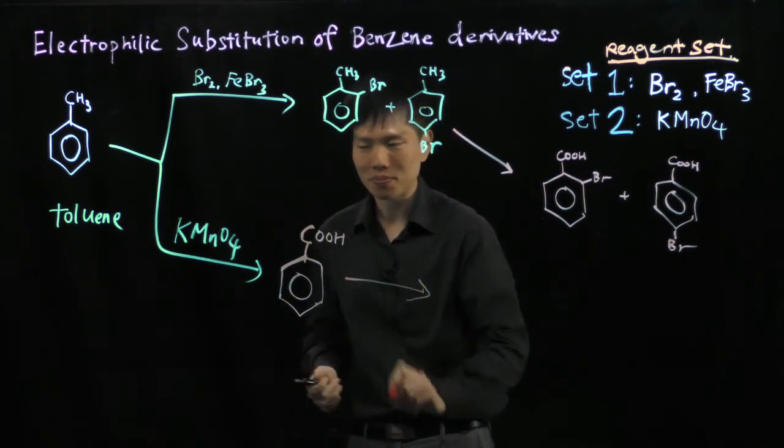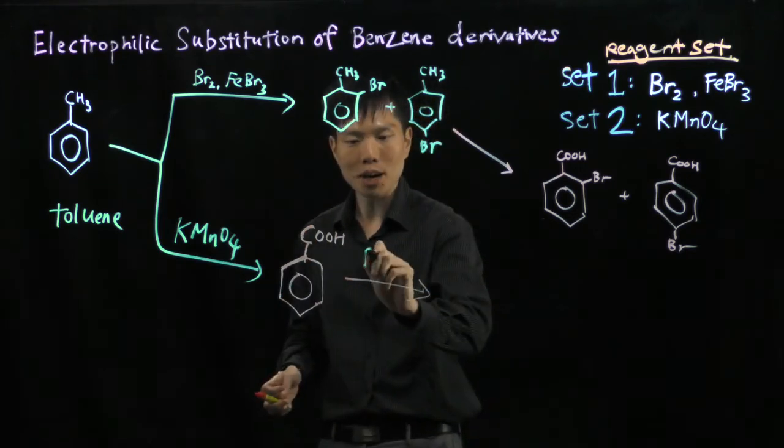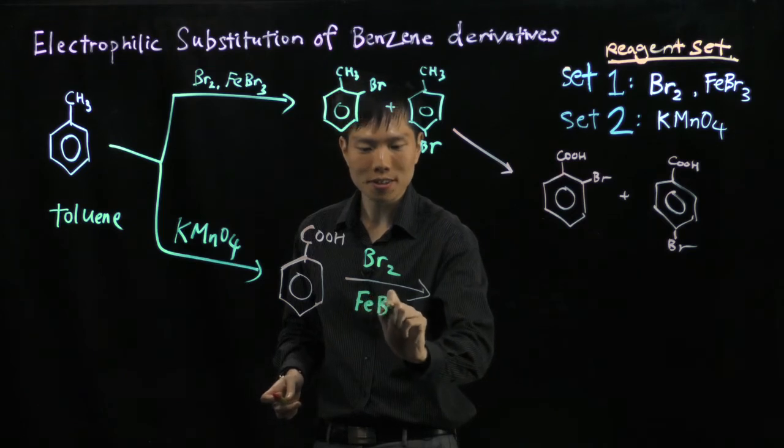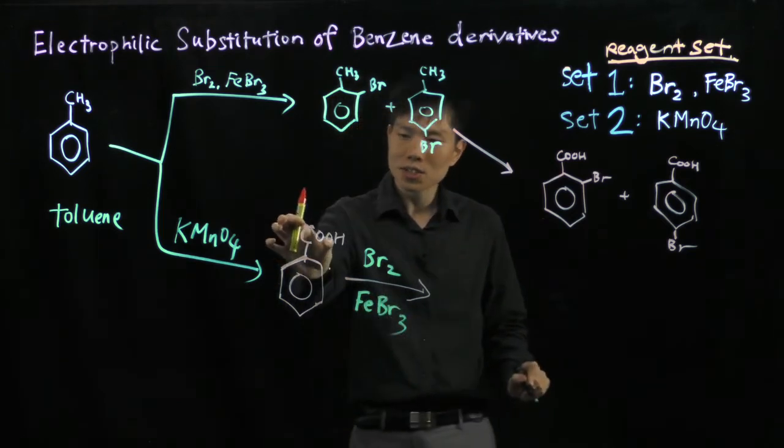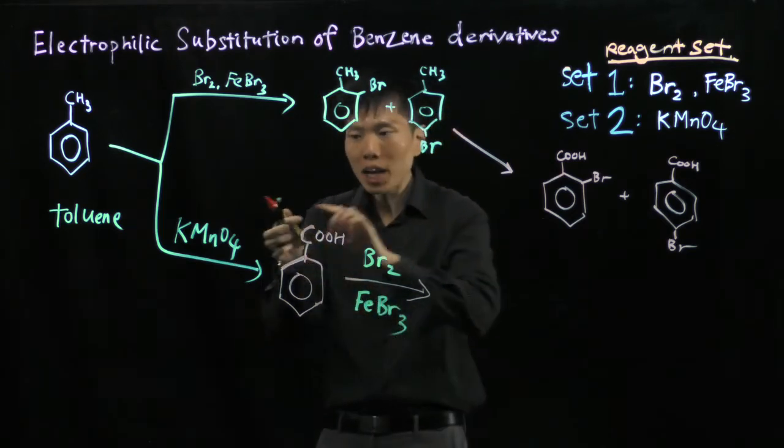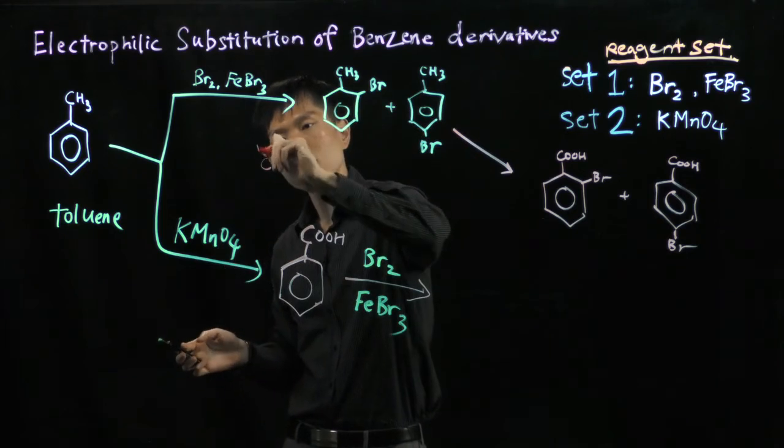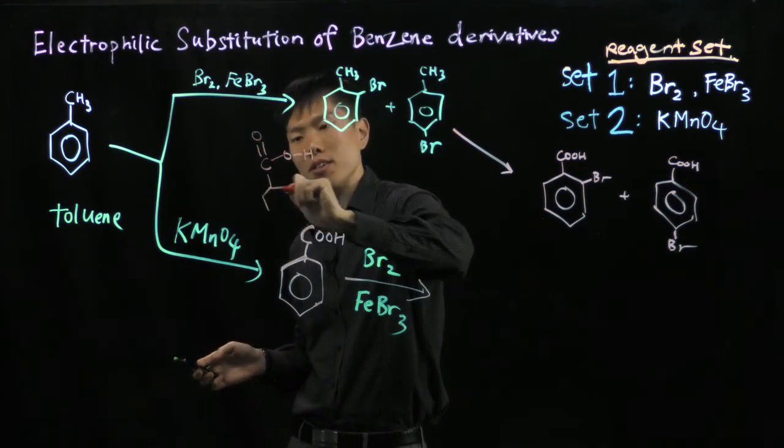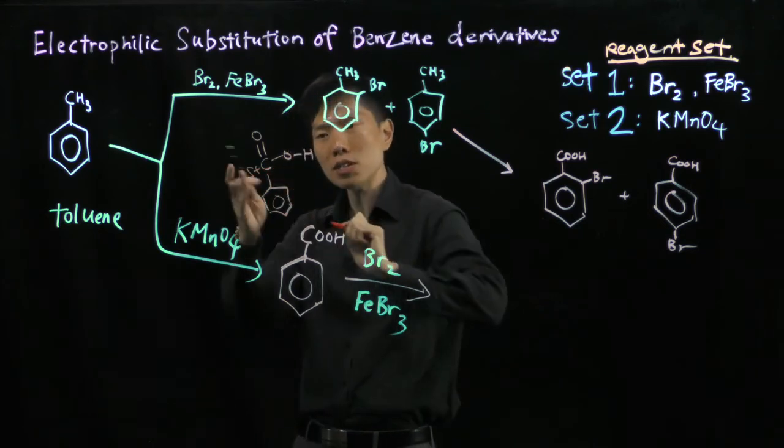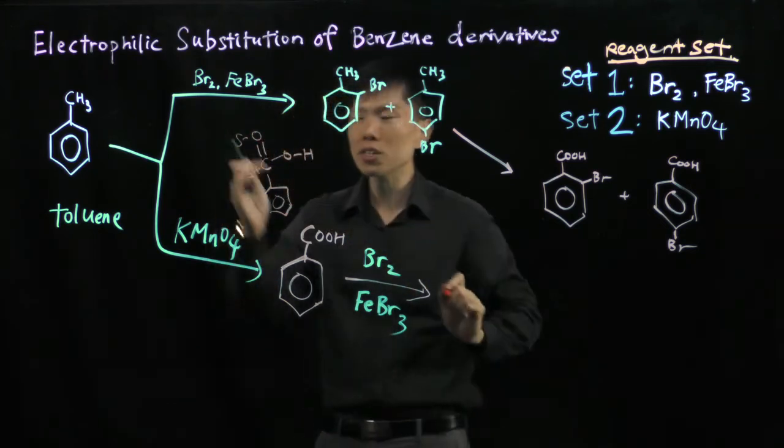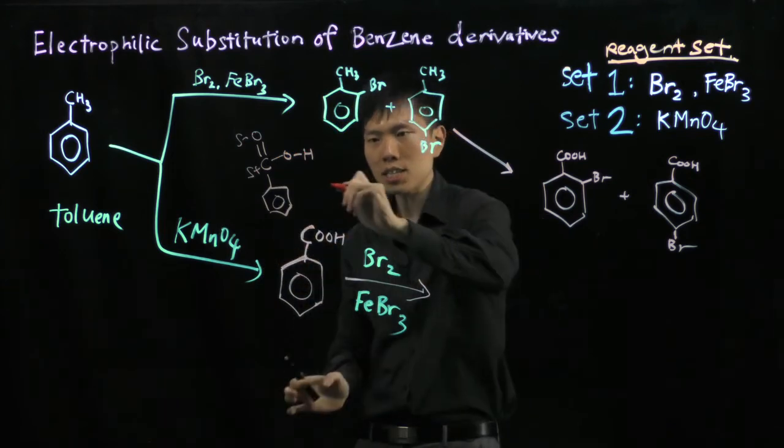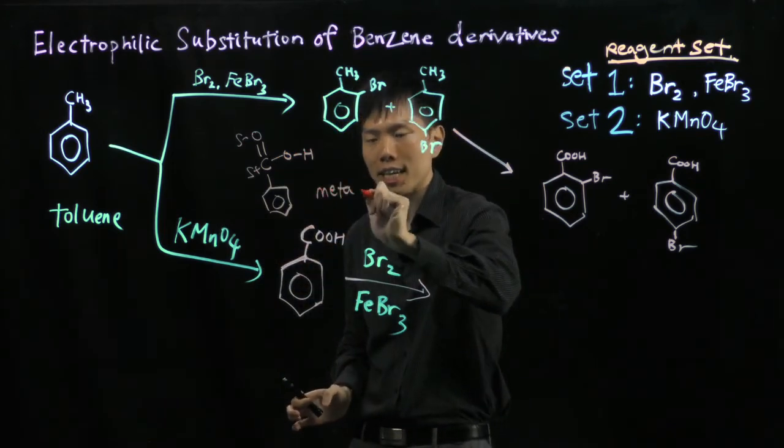So you get one product. In the next step, you add Br2 and FeBr3. Here you have an acid. When you draw the structure, you realize it has a polarized pi bond next to the benzene ring—delta positive on carbon and delta negative on oxygen.